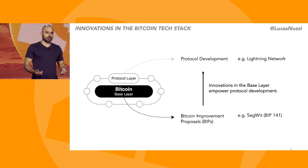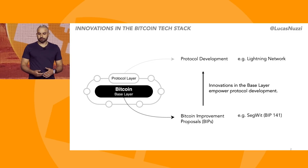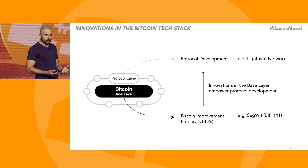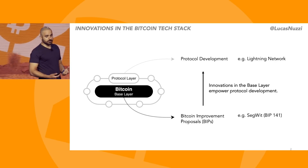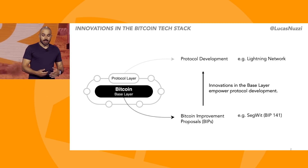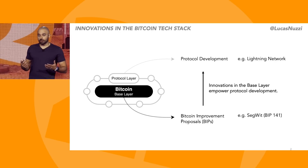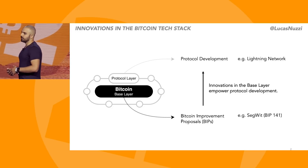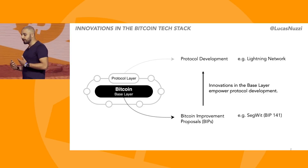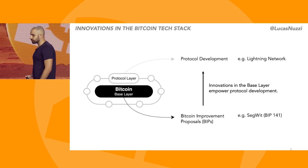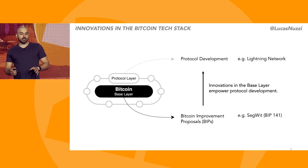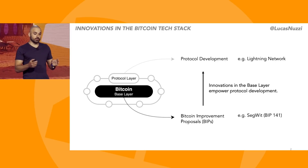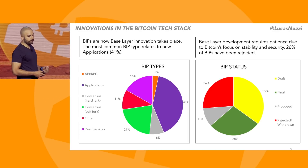As with any other base layer innovation, it was implemented via a Bitcoin Improvement Proposal. That's how base layer innovation is standardized in Bitcoin. And SegWit was really important because it enabled the development of the Lightning Network. So with this aggregation in mind, we can then zoom in and look into the base layer a little bit more closely.